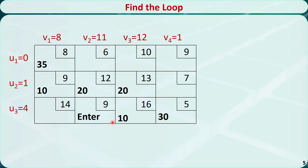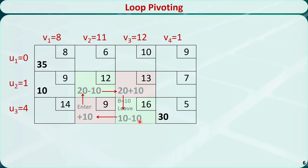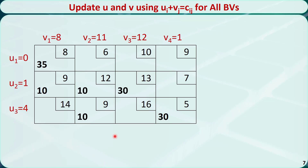In step 5, we need to find a new basic feasible solution using loop pivoting, and go to step 3. The only loop in this basic feasible solution is this one. Starting from the entering variable, we count 0, 1, 2, 3, and 0. We mark odd cells in green and even cells in red. We find the smallest value among all the odd cells, which is 10. We give this value to theta — this will be the leaving variable. We decrease odd cells by theta and increase even cells by theta, giving us the new basic feasible solution.